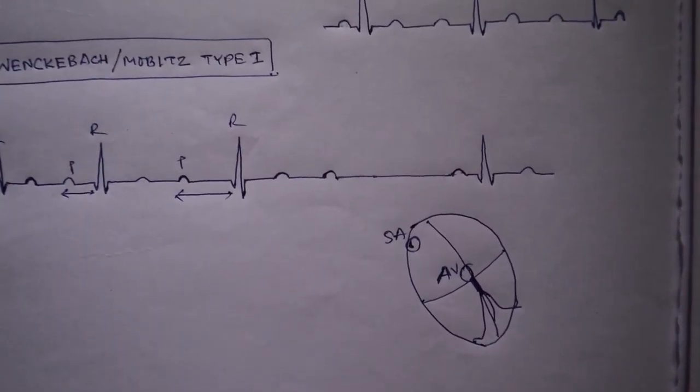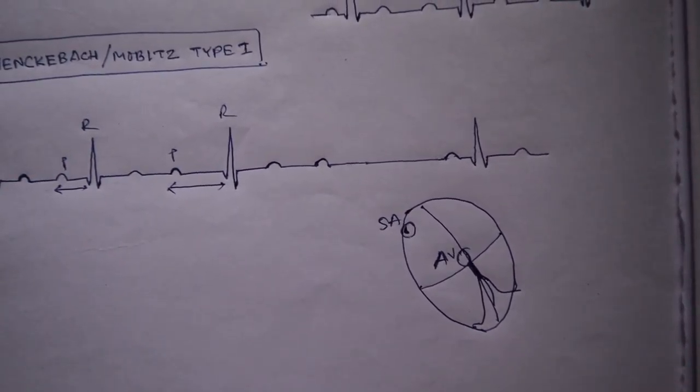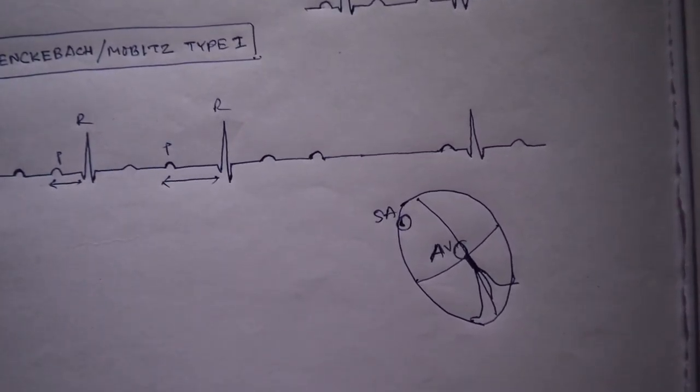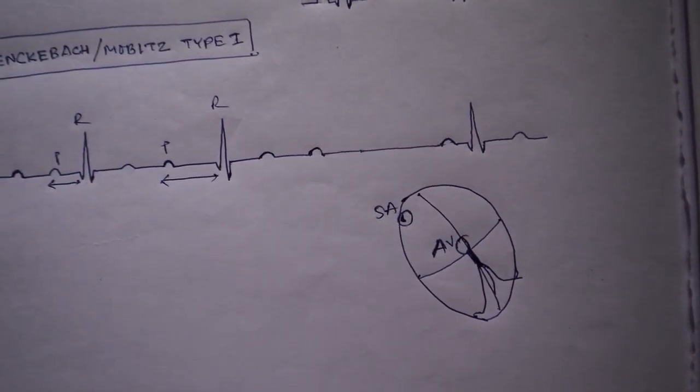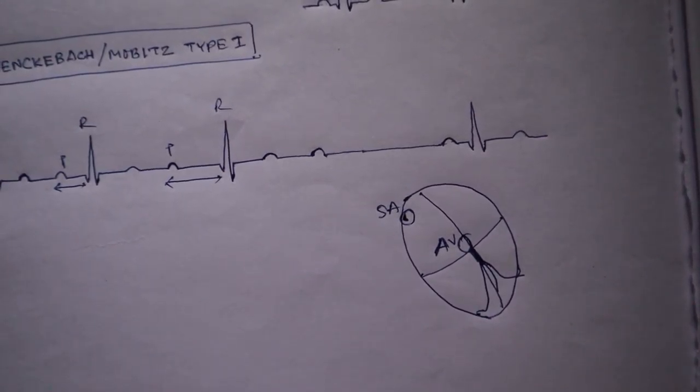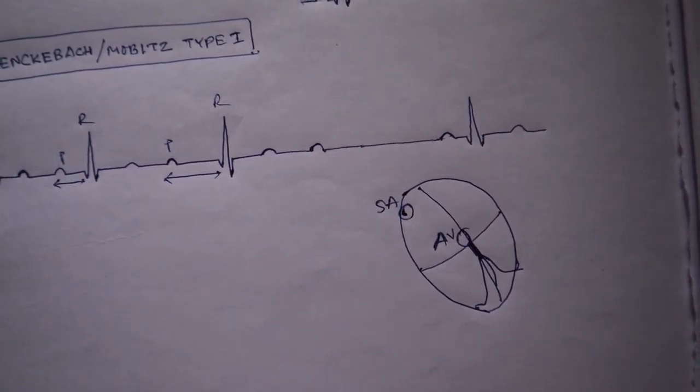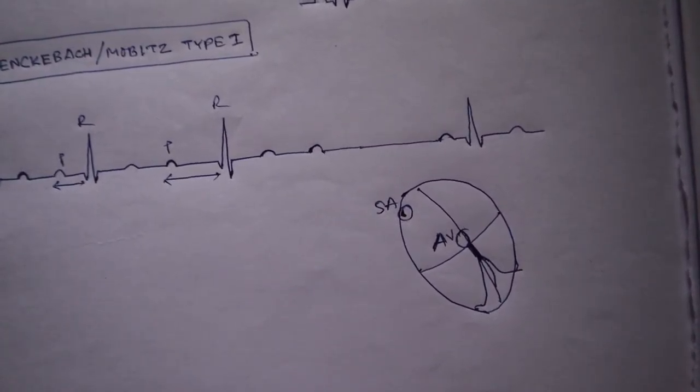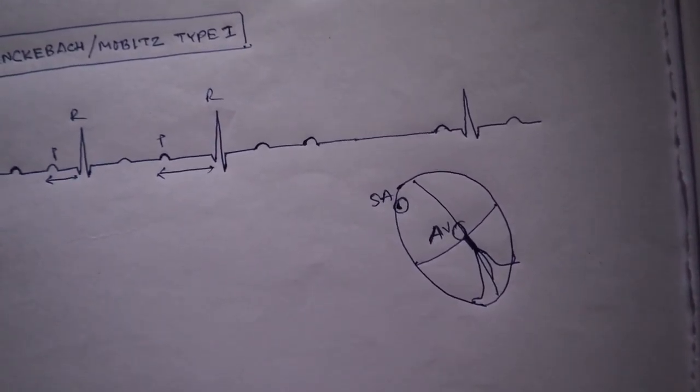Second degree AV block is when some of the impulses from the atria come down to the ventricle, not all. The impulses come to the ventricle unlike first degree AV block, where all the impulses from the atria come down to the ventricle, but there is a conduction delay at the AV nodal region. And in third degree AV block, no impulse comes down to the ventricle from the atria. But in second degree AV block, some of the impulses come down to the ventricle, not all.